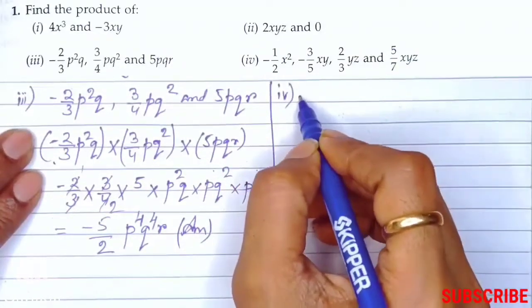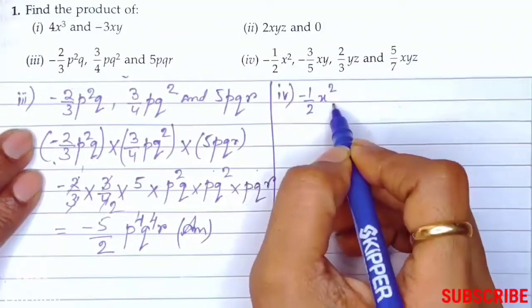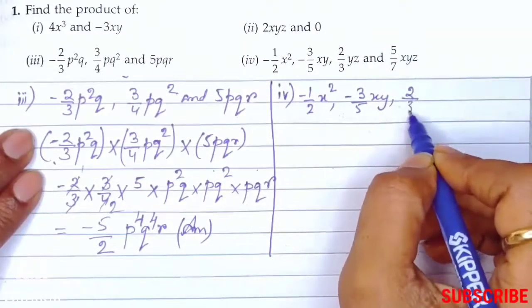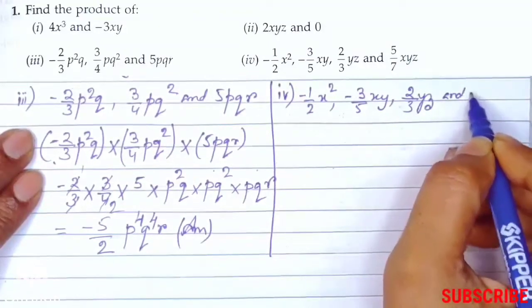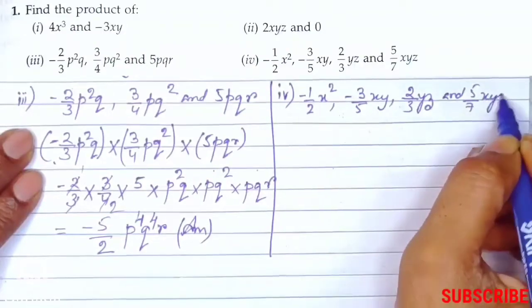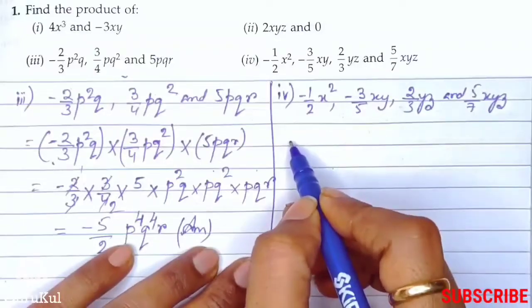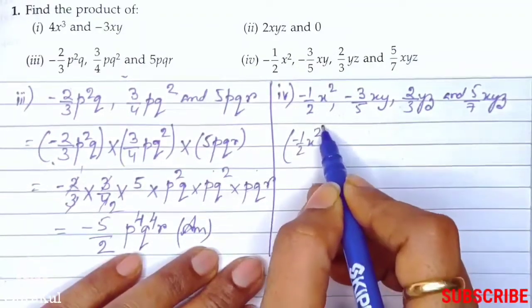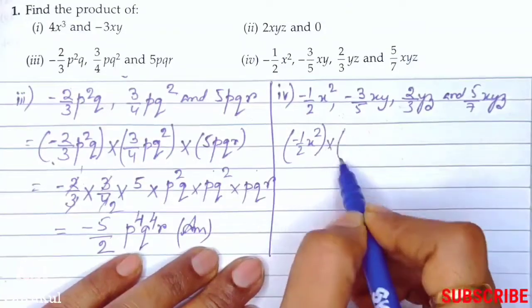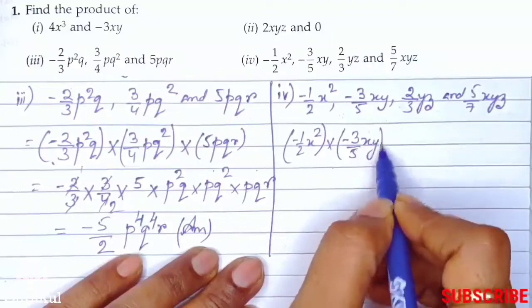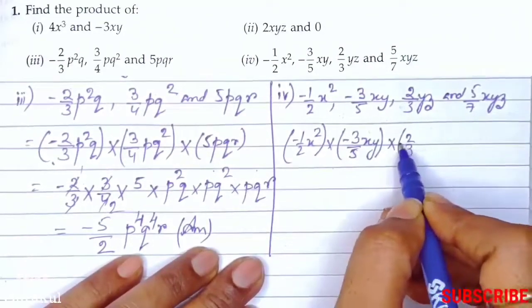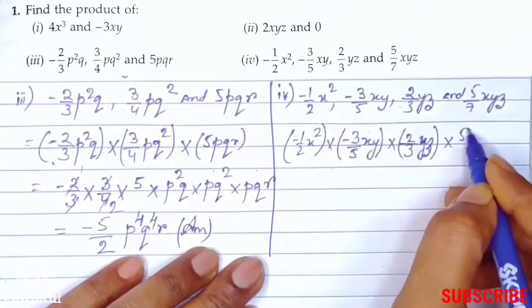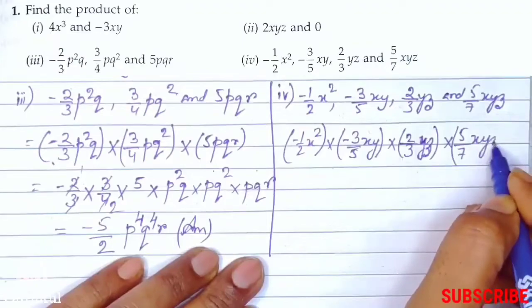Now the fourth one. It is minus 1 by 2 x square, minus 3 by 5 xy, 2 by 3 yz, and 5 by 7 xyz. So let's start. We'll take all in brackets: minus 1 by 2 x square bracket closed, into minus 3 by 5 xy, into 2 by 3 yz, into 5 by 7 xyz.